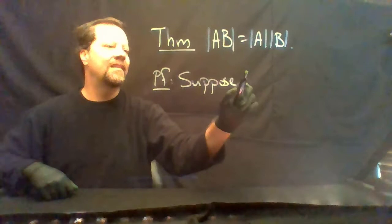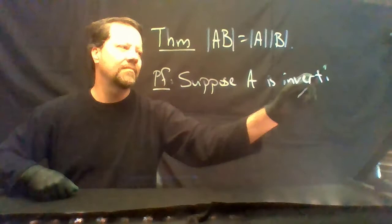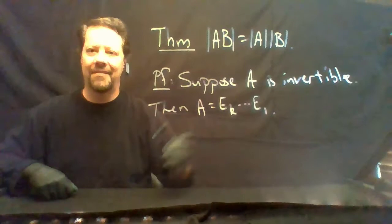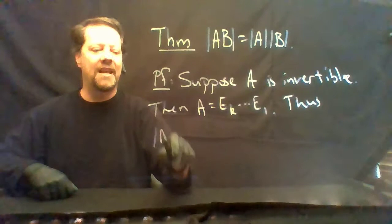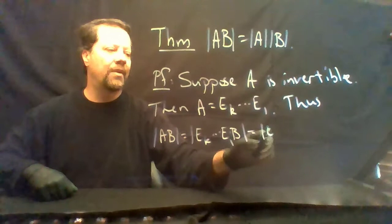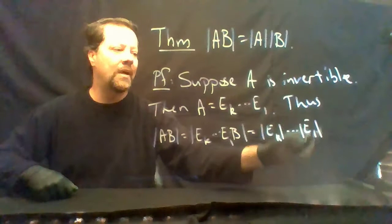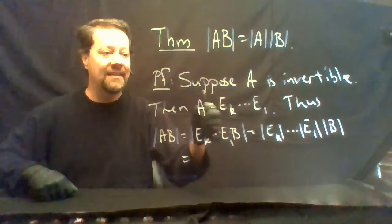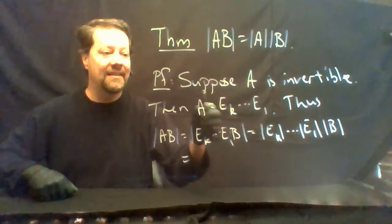Suppose A is invertible. Then A can be expressed as a product of elementary matrices. Thus det(AB) = det(E_K···E_1·B). Each elementary matrix can be broken off: det(E_K)···det(E_1) all times det(B). But det(E_K)···det(E_1) equals det(A), so we get det(A)·det(B).